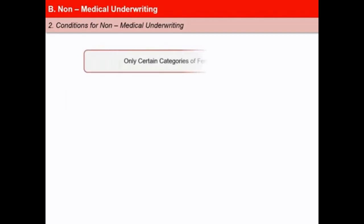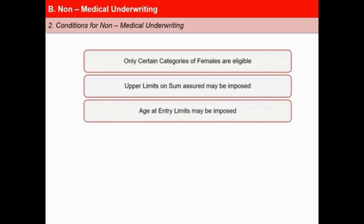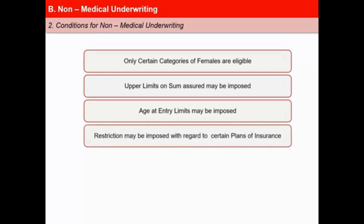However, non-medical underwriting calls for certain conditions. First, only certain categories of females like working women may be eligible. Second, upper limits on sum assured may be imposed — for example, any case having a sum assured beyond 5 lakhs would be subjected to a medical examination. Third, age at entry limits may be imposed — for example, it is compulsory to get a medical examination done for persons above 40 or 45 years of age. Fourth, restriction may be imposed with regard to certain plans — for example, a term insurance may not be allowed under the non-medical category.